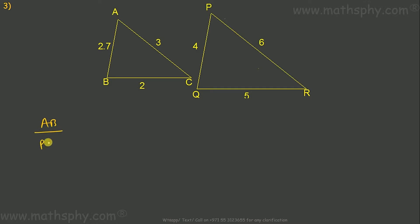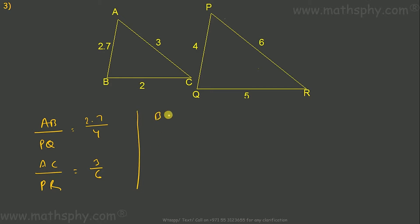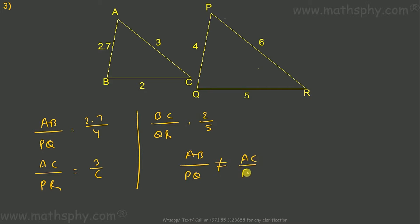For the third pair: AB over PQ is 2.7 over 4, AC over PR is 3 over 6, and BC over QR is 2 over 5. You can see that AB/PQ is not equal to AC/PR, which is not equal to BC/QR. So triangles ABC and PQR are not similar.